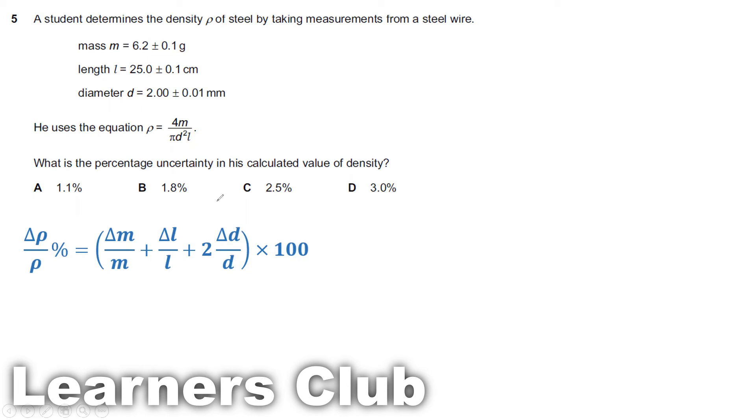Take everything and multiply by 100 because they are asking to find percentage uncertainty. So you can see, Δm, that is 0.1 divided by 6.2. Δl is 0.1 divided by 25.0. 2 into diameter 0.01 divided by 2.00.